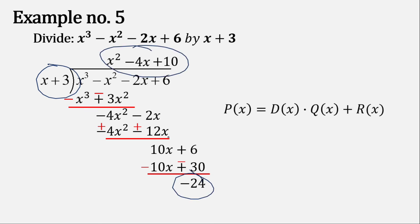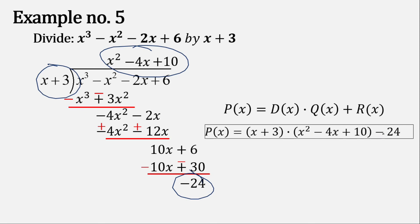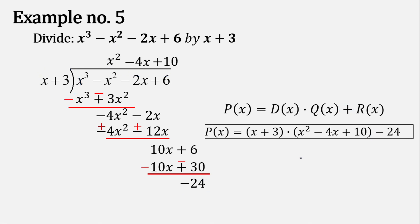If we write that in division algorithm form, note how the sign changes from positive to negative because the remainder is negative 24, so plus negative 24 over x plus 3 becomes minus 24 over x plus 3. That's our answer. That's all for our topic on dividing polynomials using the long division method. Hope you learned something — watch out for our next topic about synthetic division. Goodbye!